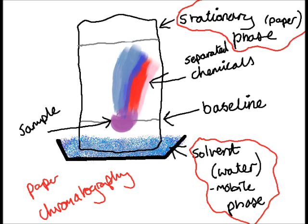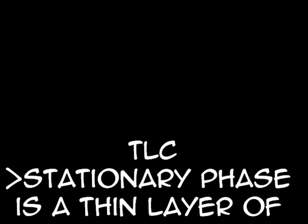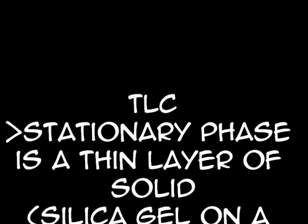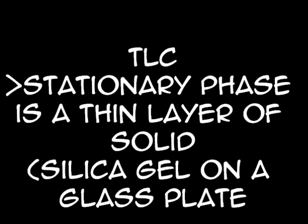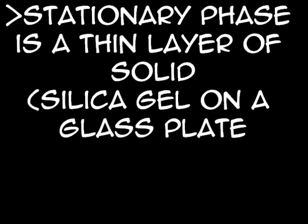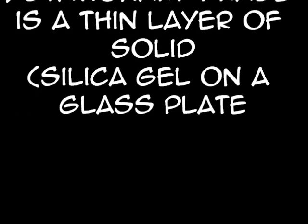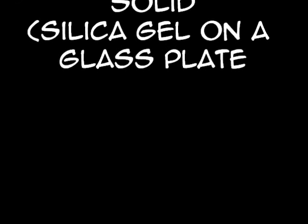Different chemicals in the sample form separate spots on the paper. There's also thin layer chromatography, or TLC. It's very similar to paper chromatography. The mobile phase is a solvent such as ethanol, just like paper chromatography, but the stationary phase is a thin layer of solid, such as silica gel on a glass plate.